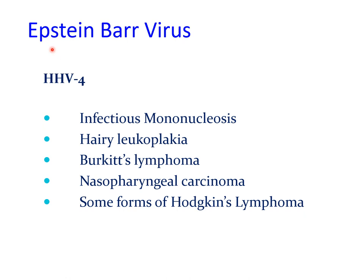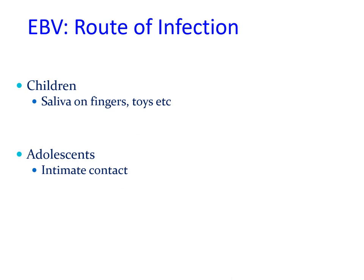Next we shall discuss human herpes virus type 4, also known as Epstein-Barr virus. This virus has a variety of important manifestations, some of which include infectious mononucleosis, hairy leukoplakia, Burkitt's lymphoma, nasopharyngeal carcinoma, and some forms of Hodgkin's lymphoma. We shall discuss each one of them in the next slides.